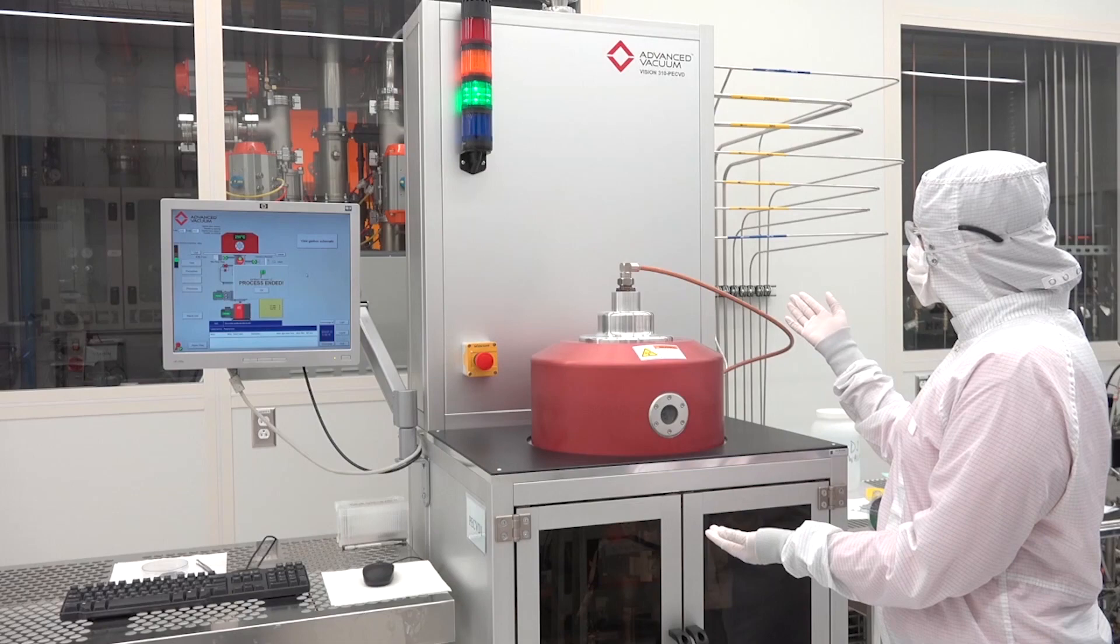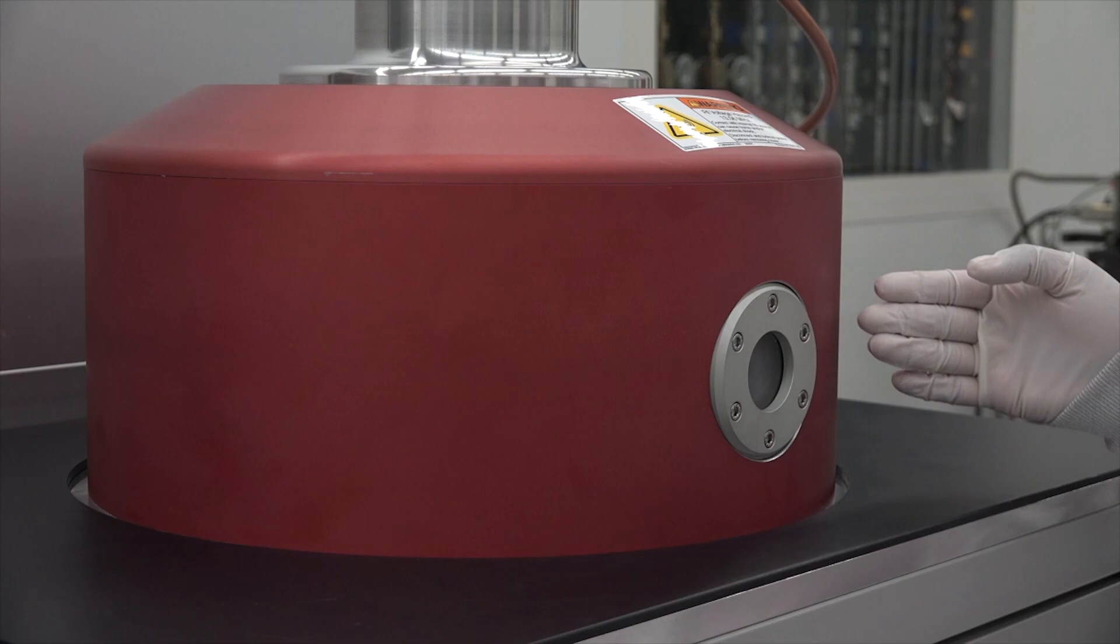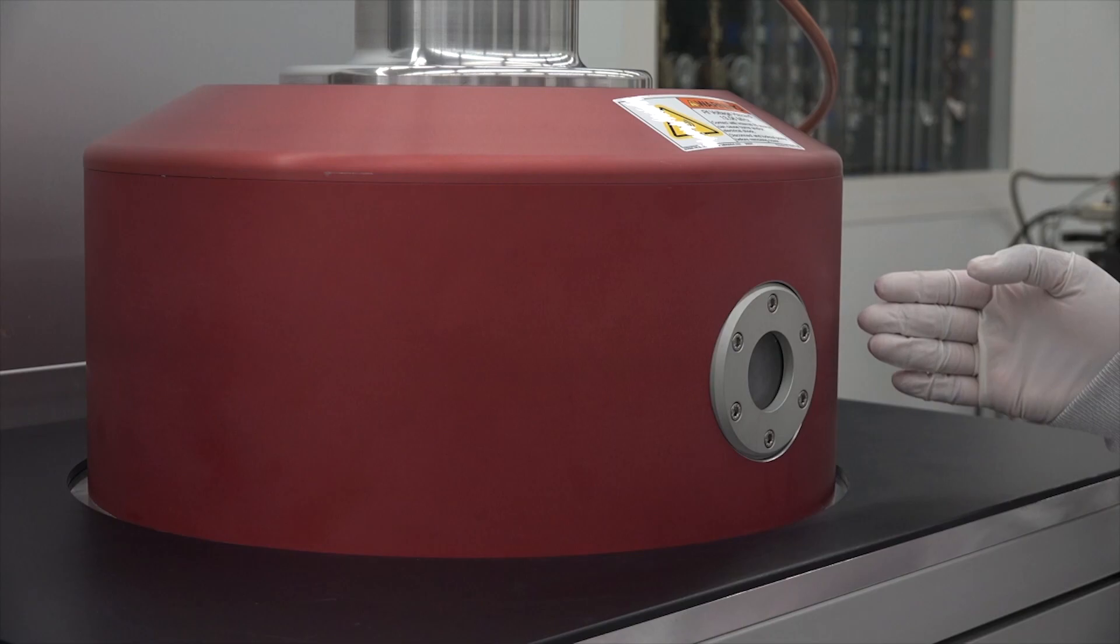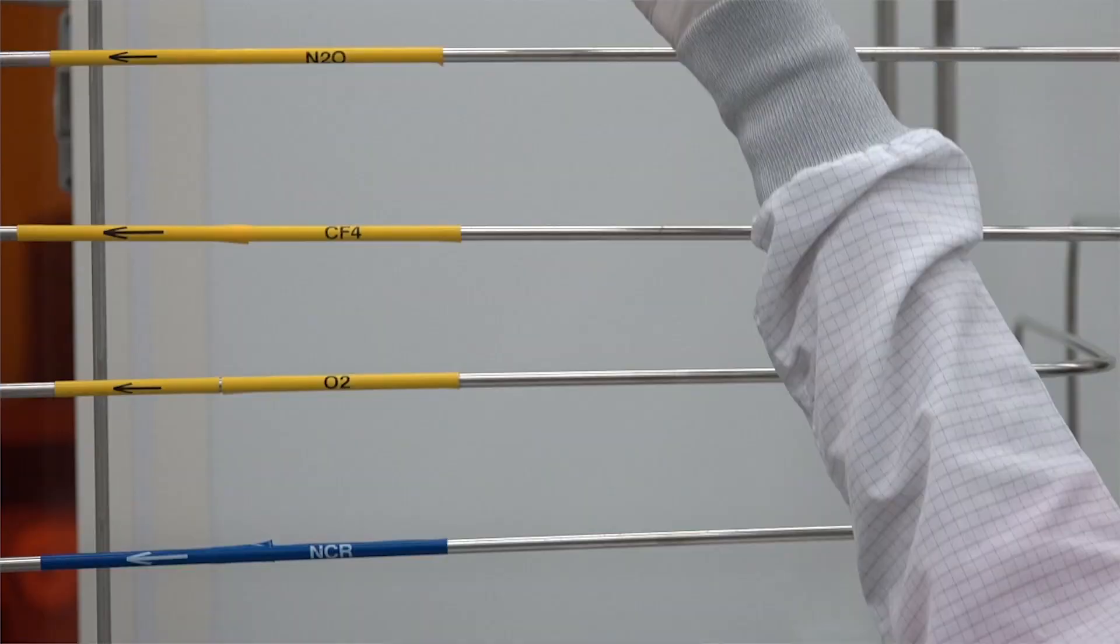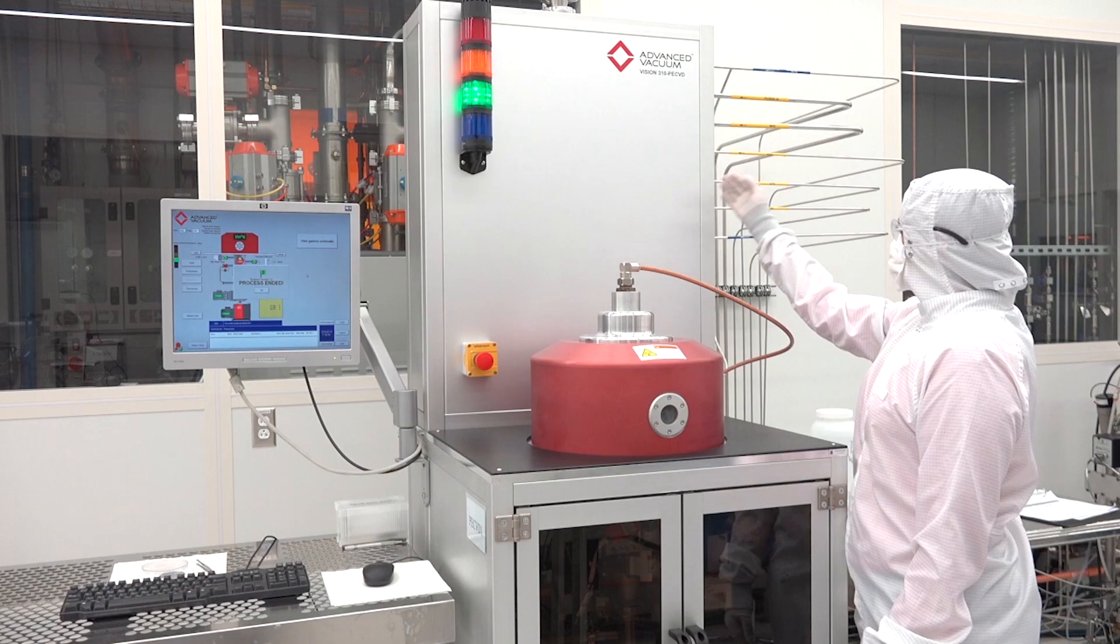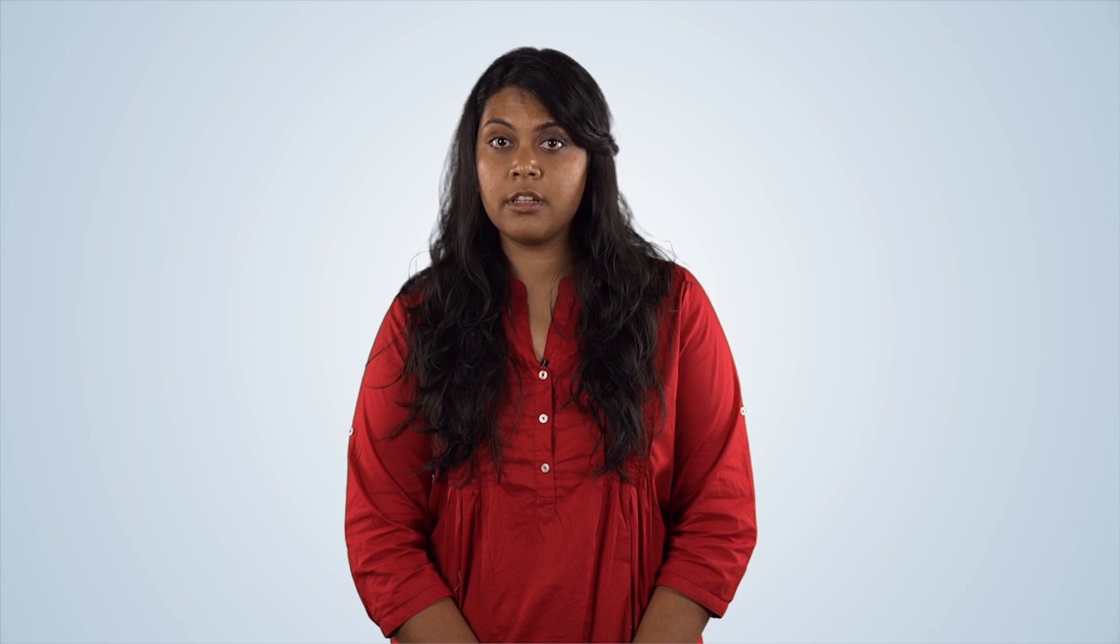This is the PECVD system located within the clean room at Duke University. The red dome is the deposition chamber. This is where the process occurs. On the side of the system, there is stainless steel tubing. These tubes carry the gases to the deposition chamber through the top of the chamber. There are many computer-controlled valves that control the exact flow of these gases. Each material deposited uses specific gases in controlled amounts, which is specified in the recipe for each material. These recipes are stored in the computer.